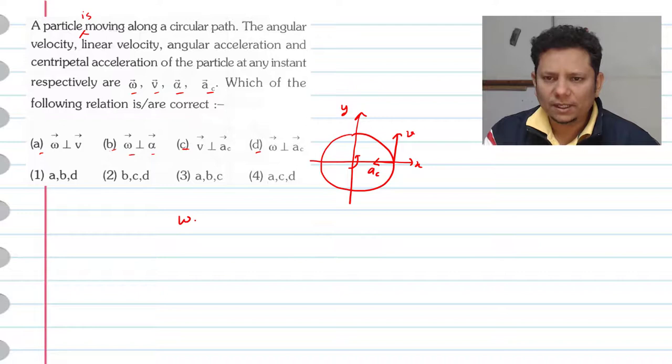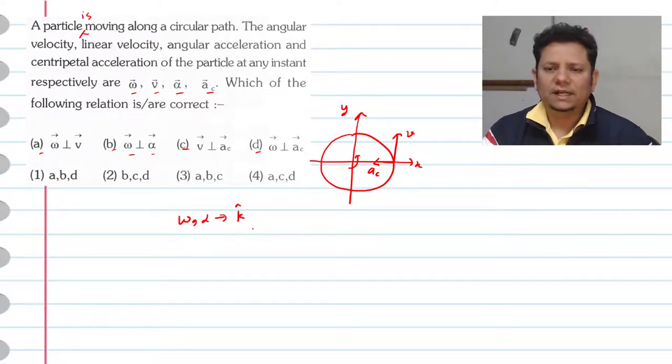So omega and alpha being axial vectors, this is perpendicular to the plane. So omega and v, they are perpendicular.